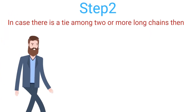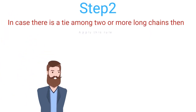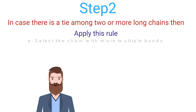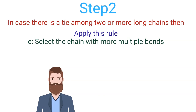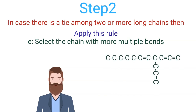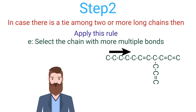In case there is a tie among two or more chains with similar length, apply this rule: select the chain with the maximum number of multiple bonds. For example, this compound contains three chains and two of them have equal length and are longer than the third. There is a tie between these two chains. The straight chain contains three double bonds while the other has two double bonds, so the straight chain will be taken as parent hydride. This chain contains eleven carbons, so the root word will be 'undec' and the primary suffix will be '-ene' because it contains unsaturation.